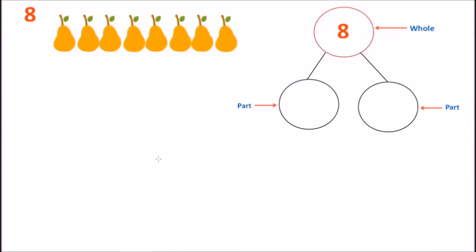Welcome and hello everyone, it's Miss Judy and in today's class we're going to take a look at the number 8. This time we're going to be using some pairs — we have eight pairs — to come up with the different numbers that make up the number 8. When you're doing number bonds, you can always start with the number 0, so we're going to start with 0 and then the number 8.